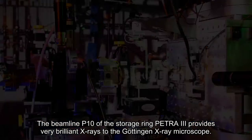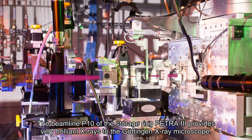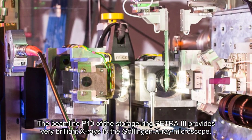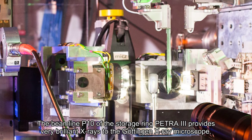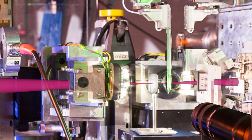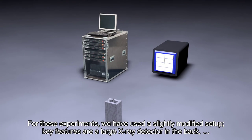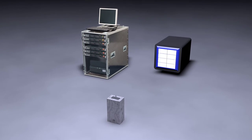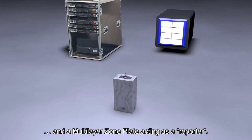The beamline P10 of the storage ring PETRA-3 provides very brilliant X-rays to the Göttingen X-ray microscope. For these experiments we have used a slightly modified setup. Key features are a large X-ray detector in the back and a multi-layer zone plate acting as a reporter.